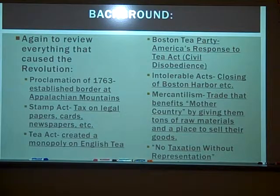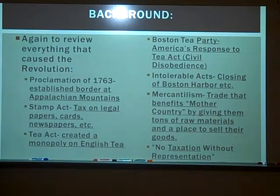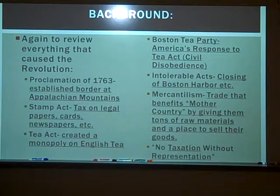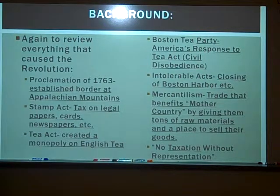The Proclamation of 1763 established a border at the Appalachian Mountains — they couldn't go further west than that. The Stamp Act was a tax on all legal papers, cards, newspapers, etc. The Tea Act created a monopoly on English tea, made theirs super cheap, and forced everybody to buy from them or pay exorbitant prices. The colonists didn't like it, so they threw the Boston Tea Party.